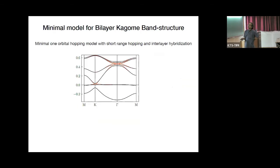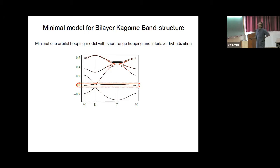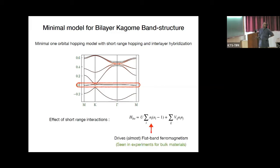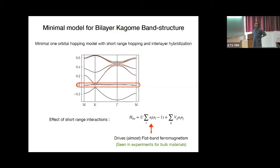For this bilayer kagome band structure, a minimal model with two spins and short-range hopping yields a nearly flat band with symmetry-protected band-touching points that can be lifted by small spin-orbit coupling or related perturbations. The question is: if I consider this flat or almost-flat band and think about short-range interactions — such as on-site Coulomb, nearest-neighbor, or next-nearest-neighbor interactions — what is the fate of the electrons in this band structure?